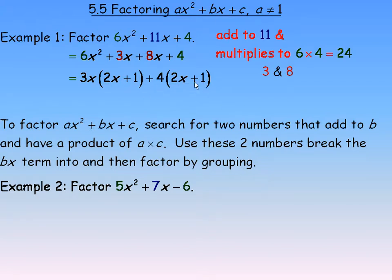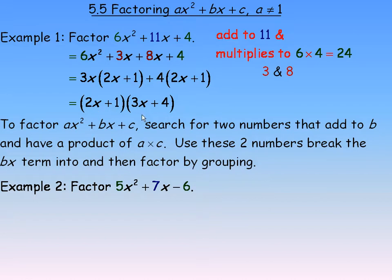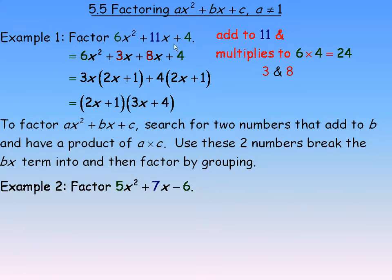Notice what is in the brackets is the same — and that is a good thing. If it is not the same, you have made a mistake, perhaps choosing the wrong numbers that didn't add to 11 or weren't factors of 24. Since both brackets are the same, you can factor out 2x plus 1, and what is left is 3x plus 4. So 2x plus 1 and 3x plus 4 are the factors of 6x squared plus 11x plus 4. You can always check by expanding back: 2x times 3x is 6x squared, the cross products give 8x plus 3x equaling 11x, and 1 times 4 gives the 4.